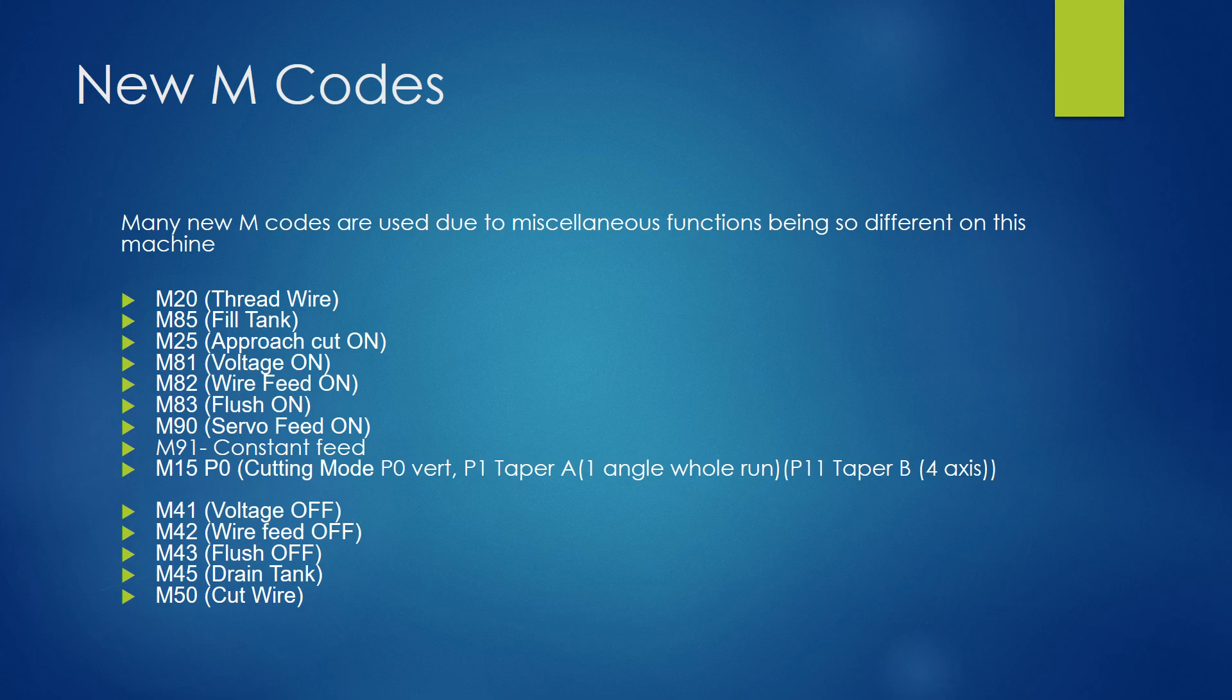So an M20 is going to thread a wire. So if I needed to go to various locations and re-thread, I could. Most machines these days have an automatic wire thread, automatic wire cut function. So that's what an M20 does.